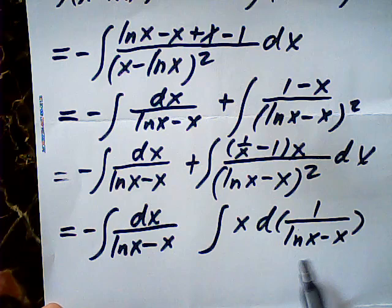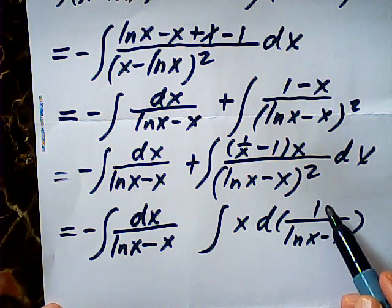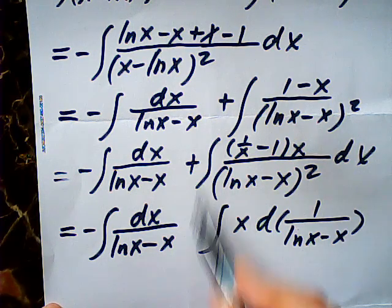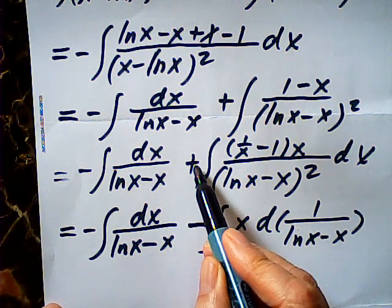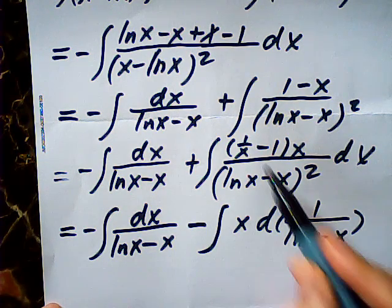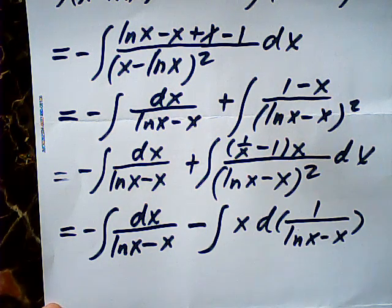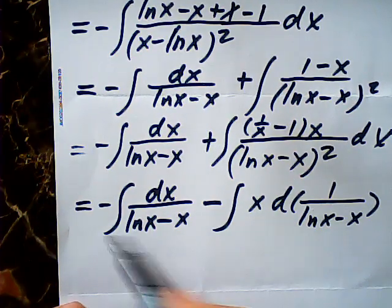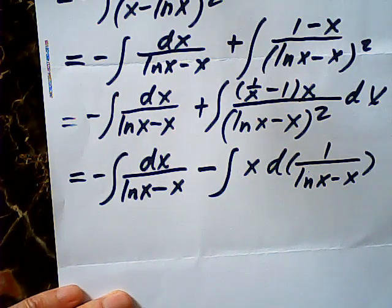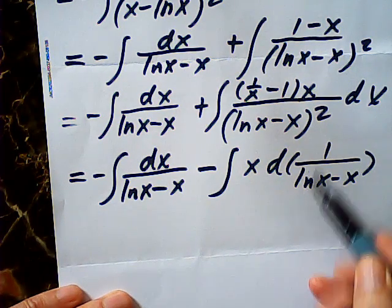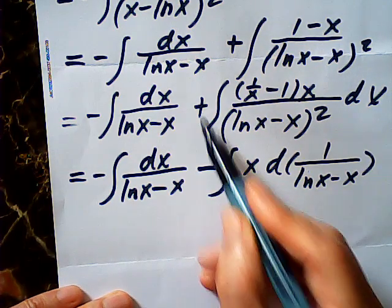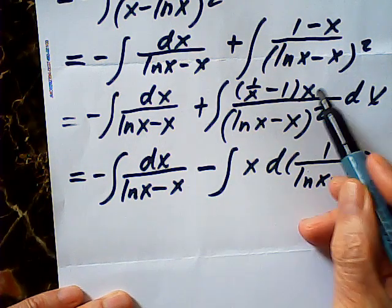This derivative will be negative 1 over this square. So positive becomes negative, and multiply by this derivative times this one. So the equal sign is maintained. This one is negative, this over this square times this. So I change the positive to negative.